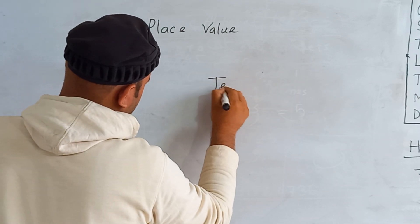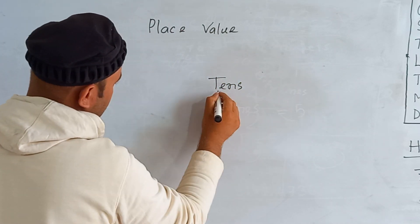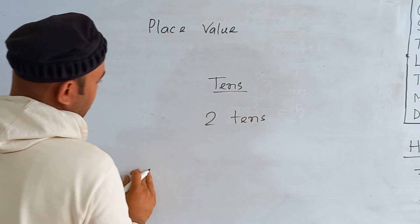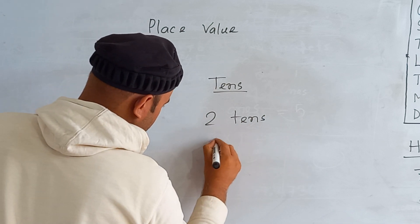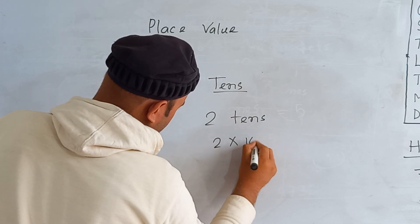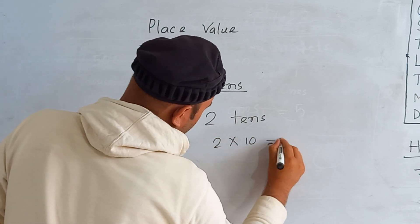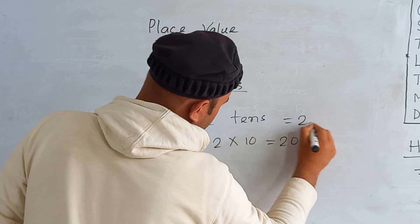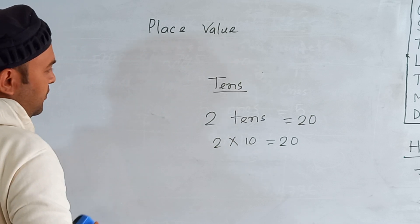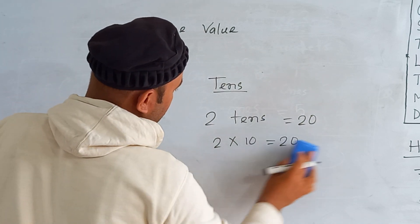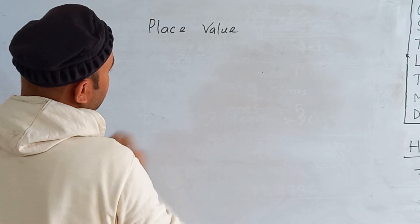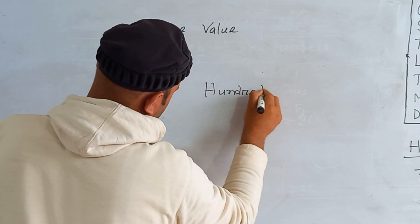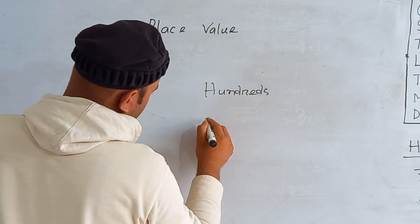Then for tens place: if I write two tens, that means two multiplied by ten. Two tens equals twenty. I hope you understood the tens place.